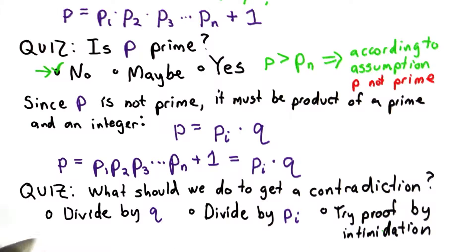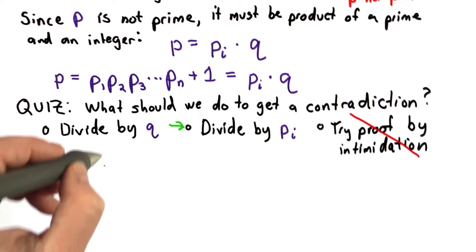The answer is we don't need to resort to proof by intimidation in this case. We can prove this by dividing by P_i. So what happens when we divide by P_i?